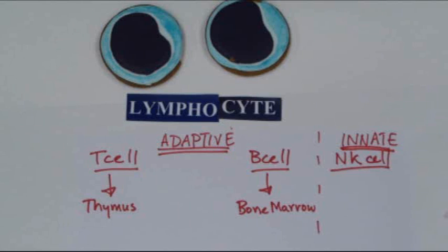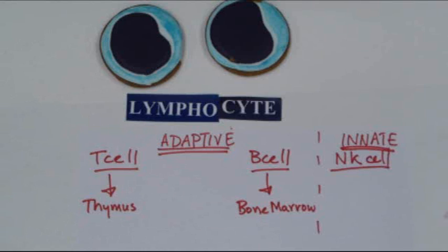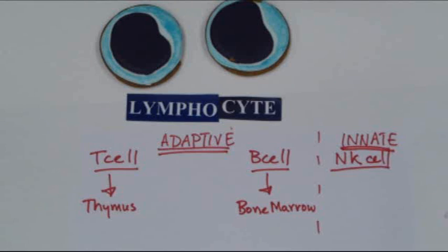T cells come in three different varieties. There is the T helper cell, which secretes ingredients to help stimulate the other cells of the immune system. There is the T suppressor cell, which suppresses some of the actions of the other cells in the immune system. And there is also a T cytotoxic cell, which helps destroy tumor cells.